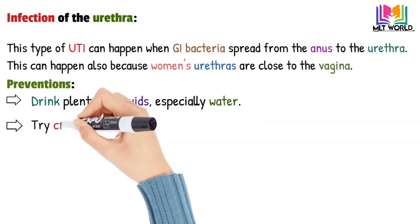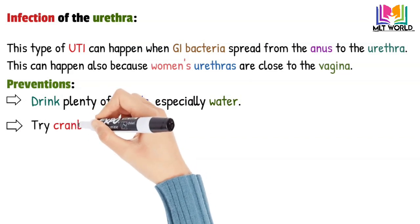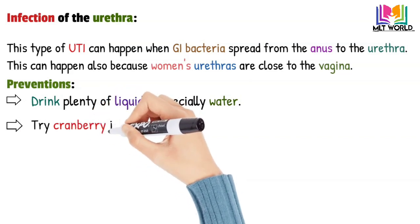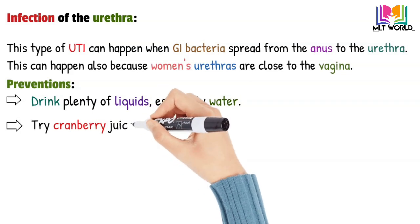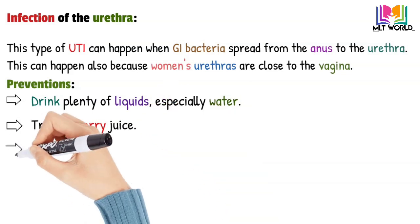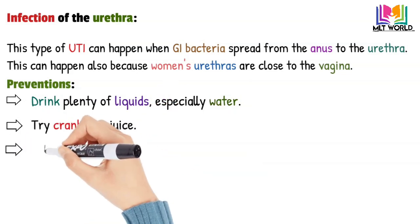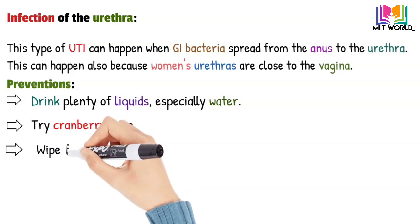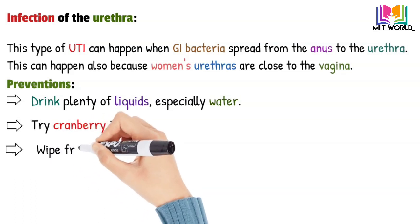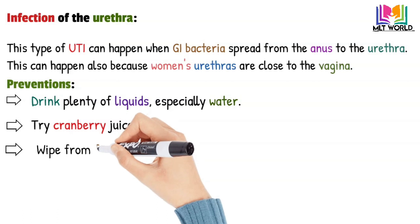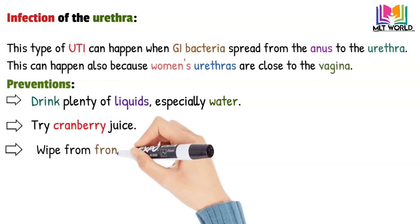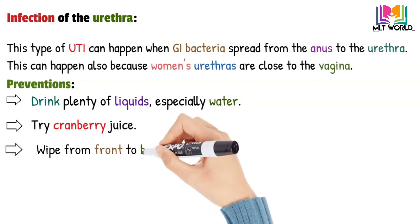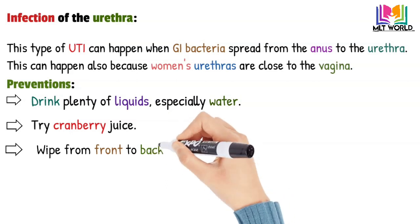Second, try cranberry juice. Studies into whether cranberry juice prevents UTI are still not final; however, drinking cranberry juice is likely not harmful. Third, wipe from front to back after urinating and after bowel movements — this helps prevent the spread of bacteria from the anus to the vagina and urethra.